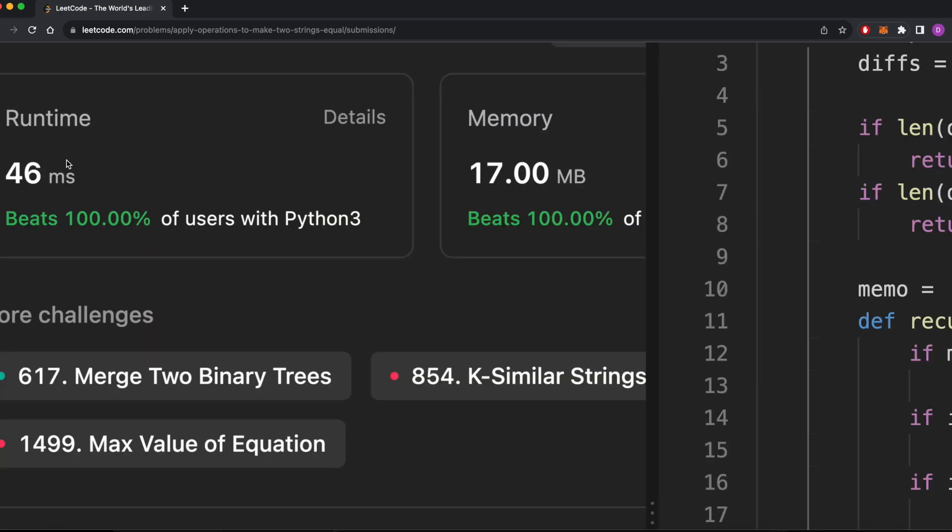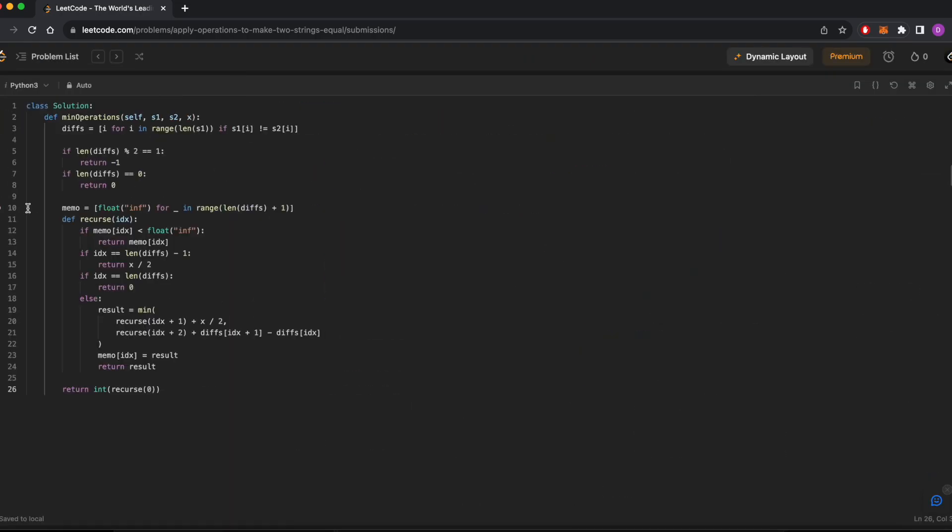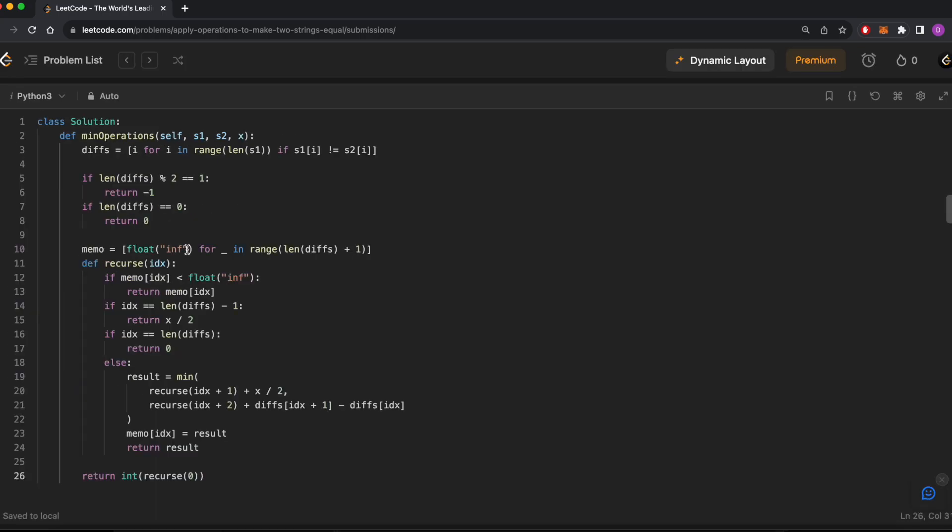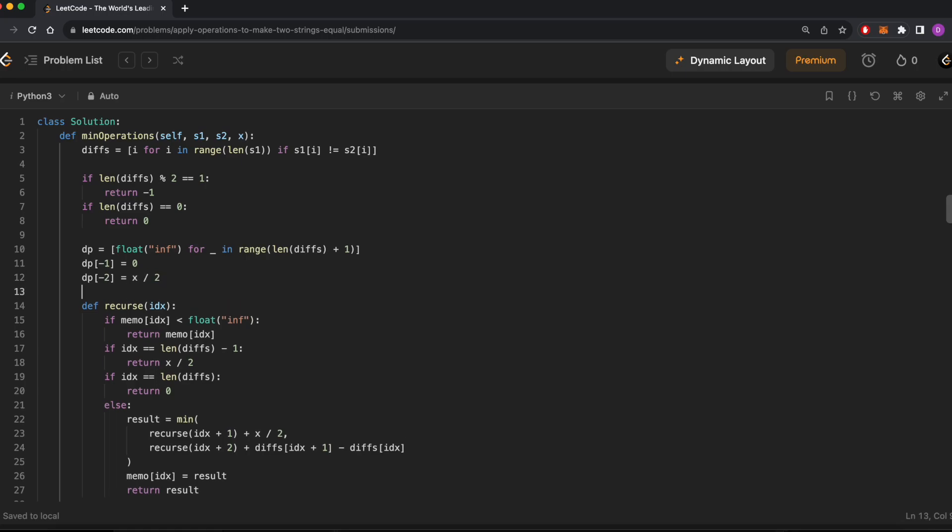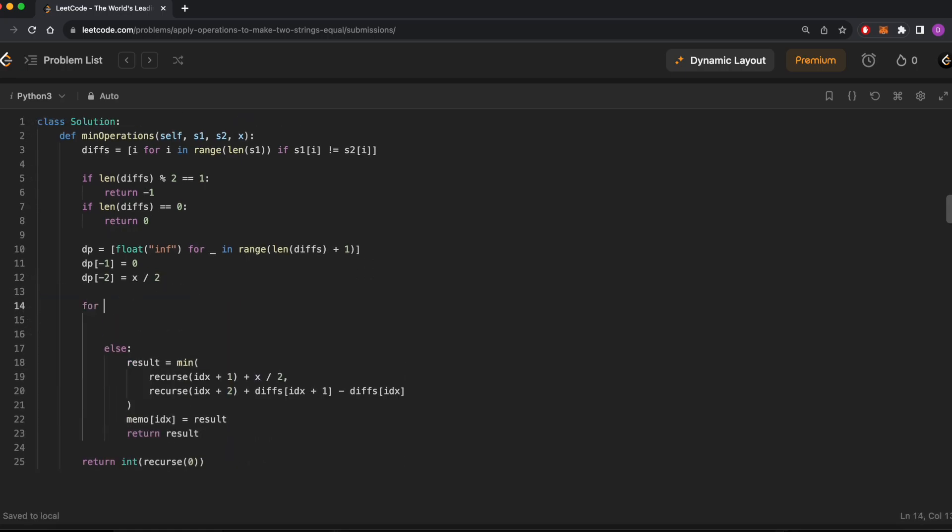This solution works and runs in a reasonable amount of time, but notice that we're actually doing a lot of wasted recurse calls even with the memoization. The result of recurse(idx) is only dependent on recurse(idx+1) and recurse(idx+2). So we can actually get rid of this entire recurse function and instead rename our memo array to dp. We'll initialize the end of our dp array with the base cases we had earlier and then work backward through the array. The result of dp[i] is simply going to be the minimum of dp[i+1] + x/2 and dp[i+2] + diffs[i+1] - diffs[i].